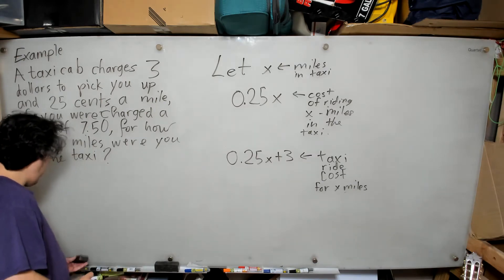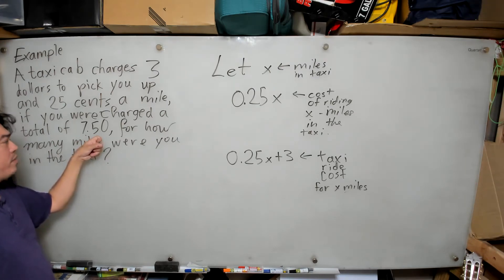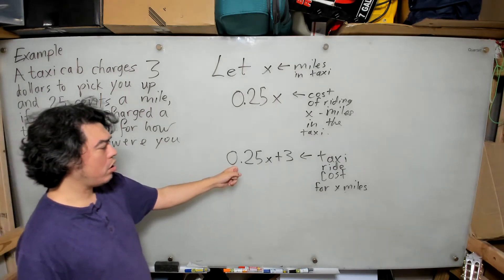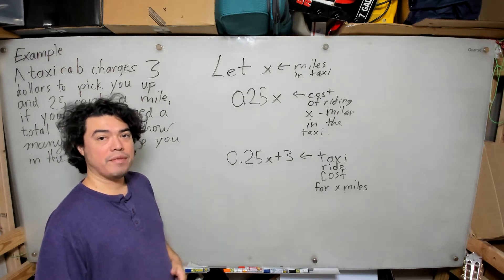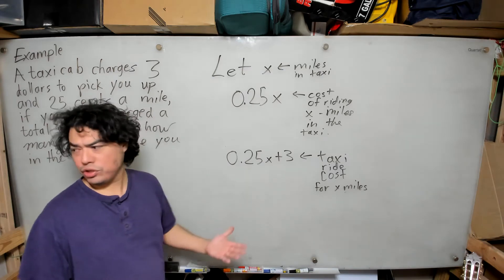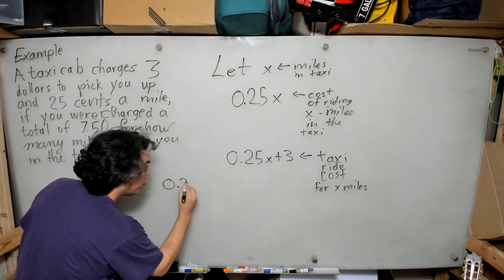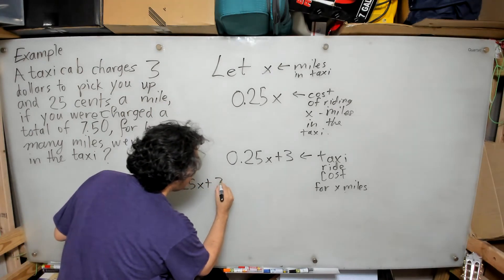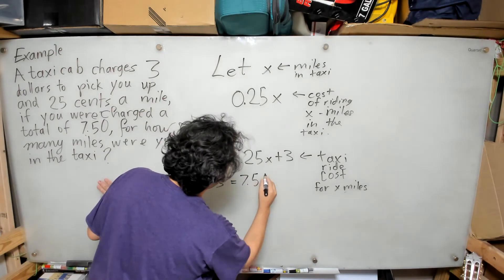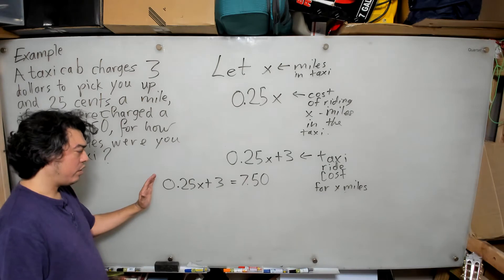Now we can approach the end of the problem. They tell us the total cost of the trip was $7.50. So I'm going to set my cost expression equal to 7.50 and solve for x — that will answer the original question of how many miles we drove. The equation is: 0.25x + 3 = 7.50.